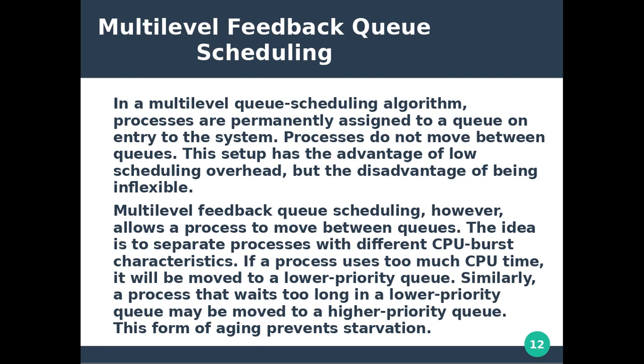Multi-level feedback queue scheduling, however, allows a process to move between queues. This is the key difference from multi-level queue scheduling. The idea is to separate processes with different CPU burst characteristics. If a process uses too much CPU time, it will be moved to a lower priority queue.